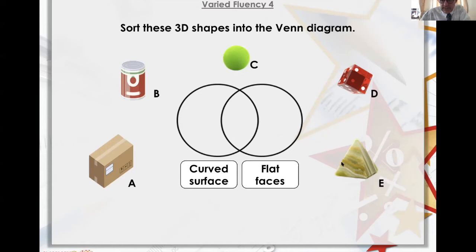Flat face is D, flat face is E. There you go. B had both. C only had curves. Well, okay. Well, I think we can do this then.